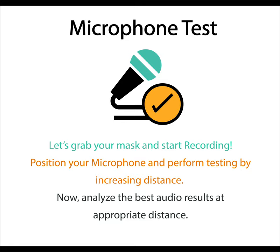Microphone test. We recommend performing a short test to verify that everything is running correctly and you are ready to record great-sounding audio. Let's grab your medical mask and start recording. Position your microphone directly an inch away from yourself and speak words: I am an inch away from my microphone. Move your microphone or yourself a couple of inches away and repeat. Perform the test by further increasing the distance to about 15 inches away. Now let's analyze the result. If speaking too close to your microphone has distorted the audio quality, find the reasonable distance of balance. If your microphone produces indistinguishable results by changing the distance, record at an appropriate distance of about 15 inches away. When everything sounds just about perfect, that's all you need to record a great-sounding podcast, voiceover, or announcement.